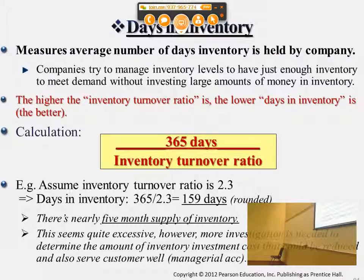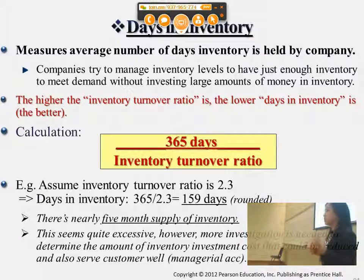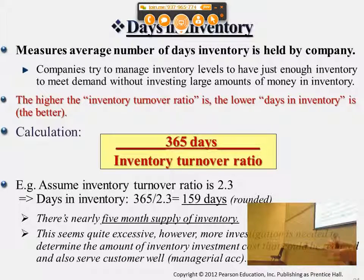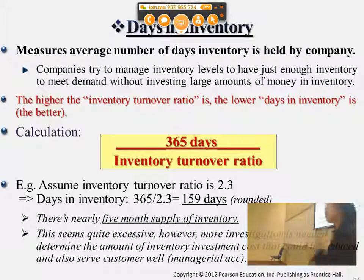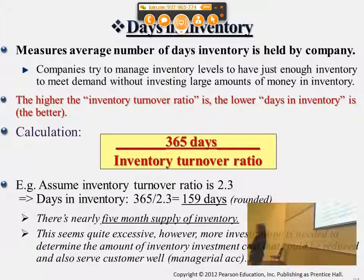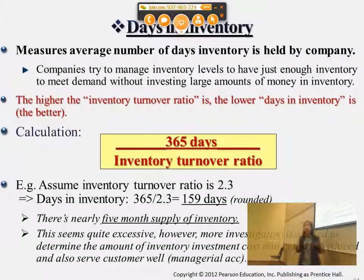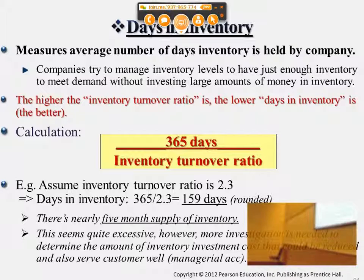All these ratios are based on comparison — there's no specific number of days or turnover rate that's universally considered good, as it varies by industry. You must compare against the same business over time and across the industry. As a general trend: if gross profit rate is increasing, that's a good sign; if inventory turnover rate is increasing, that's a good sign; and if days in inventory is decreasing, that's a good sign, since it means inventory isn't sitting in storage as long.